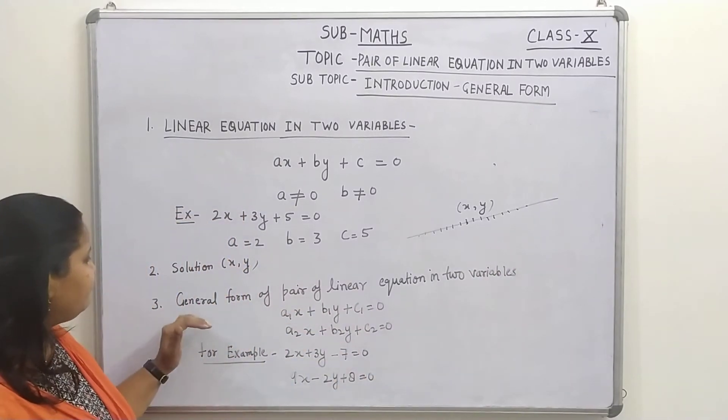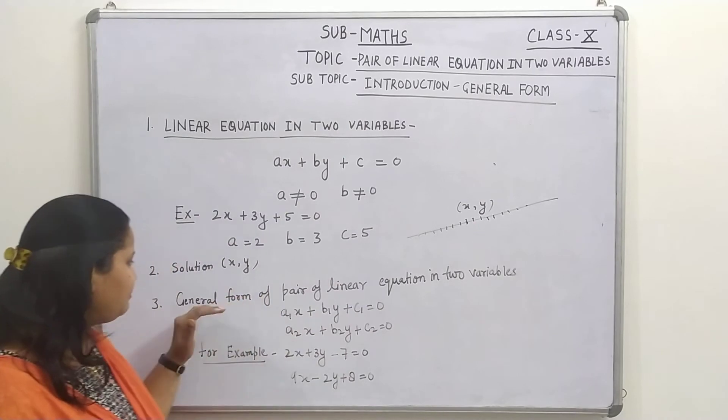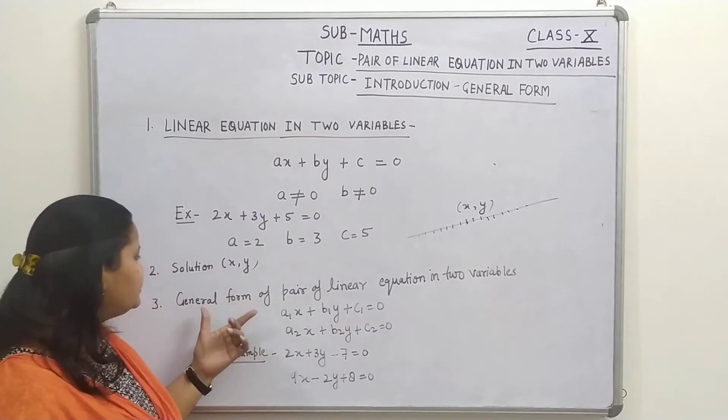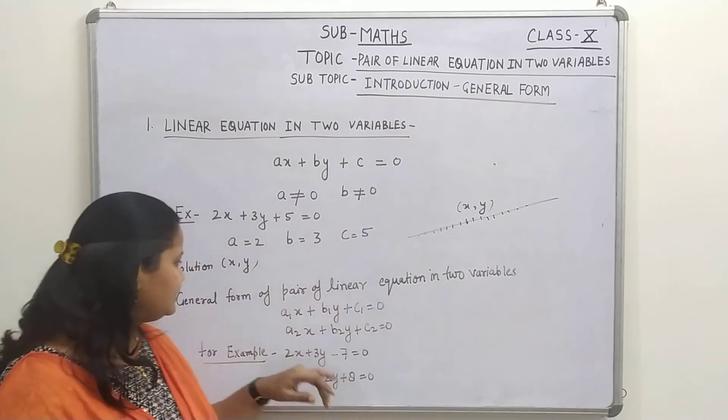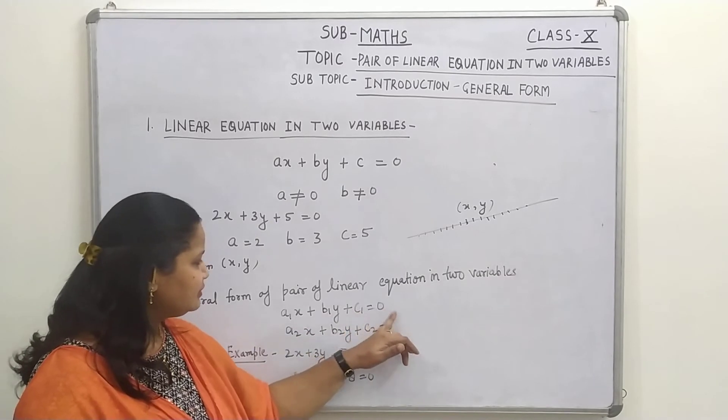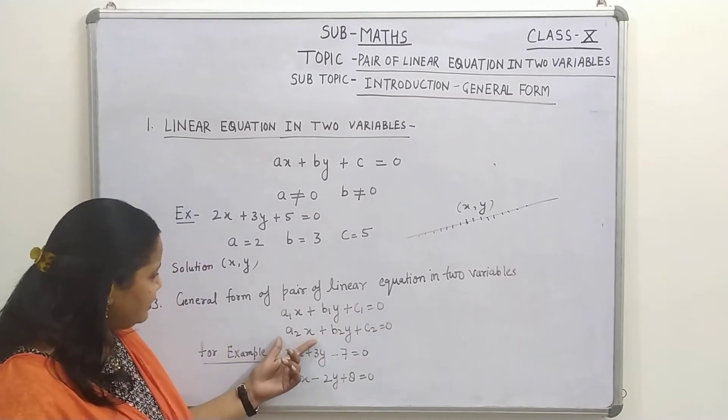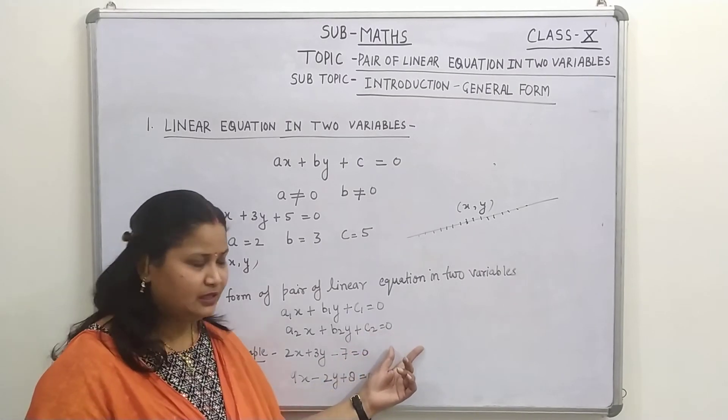Now, children, we will discuss here about the pair of linear equations. So, pair, pair means, as you know, it means 2. So, the general form of pair of linear equations in 2 variables is A1X plus B1Y plus C1 equals to 0, and A2X plus B2Y plus C2 equals to 0.